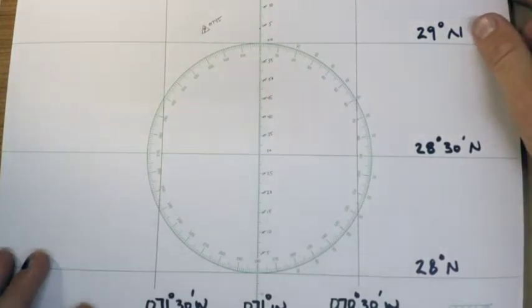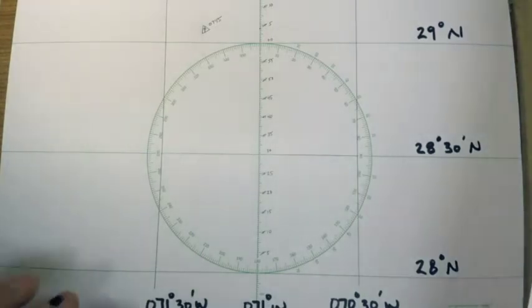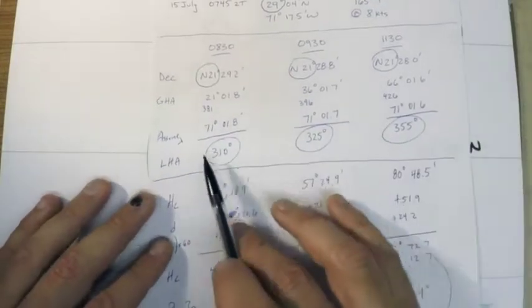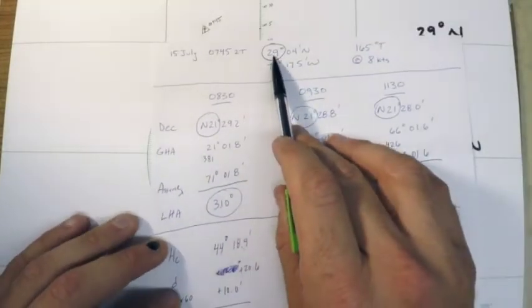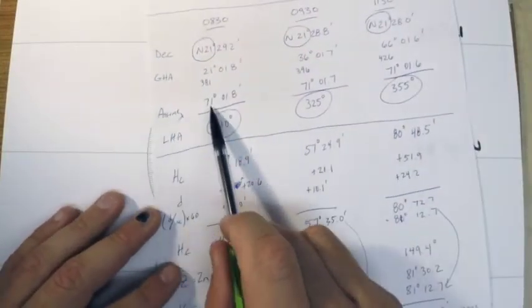I also went ahead and plotted our 0745 position as given in the problem, and then from there you can follow along as we plot all of our three sun lines and then determine our 1130 running fix. The first step in plotting these is going to get our assumed position for each one.